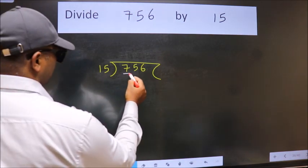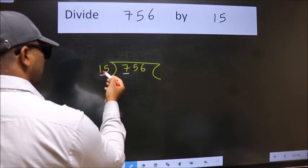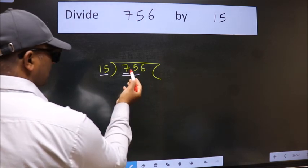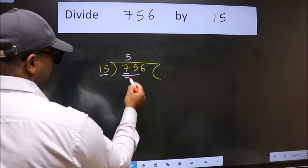Here we have 7. Here 15. 7 is smaller than 15. So we should take two numbers, 75. When do we get 75 in 15 table? 15 fives 75.